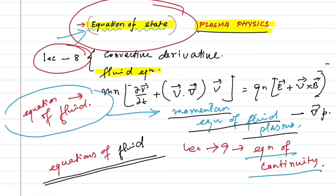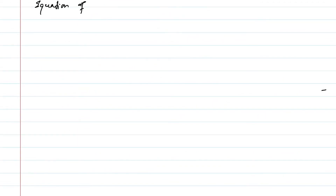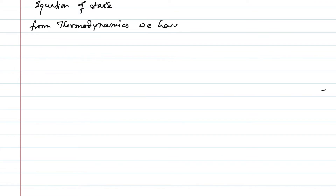Links to lecture 8 and lecture 9 videos are given in the description box, so you may watch those two videos before you watch this one. From thermodynamics, we have pressure p equal to c times rho to the power gamma, where c is a constant.